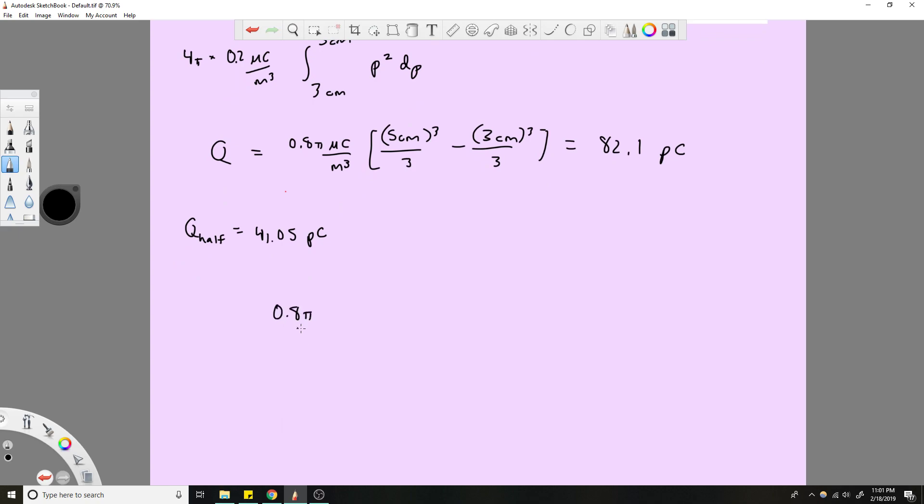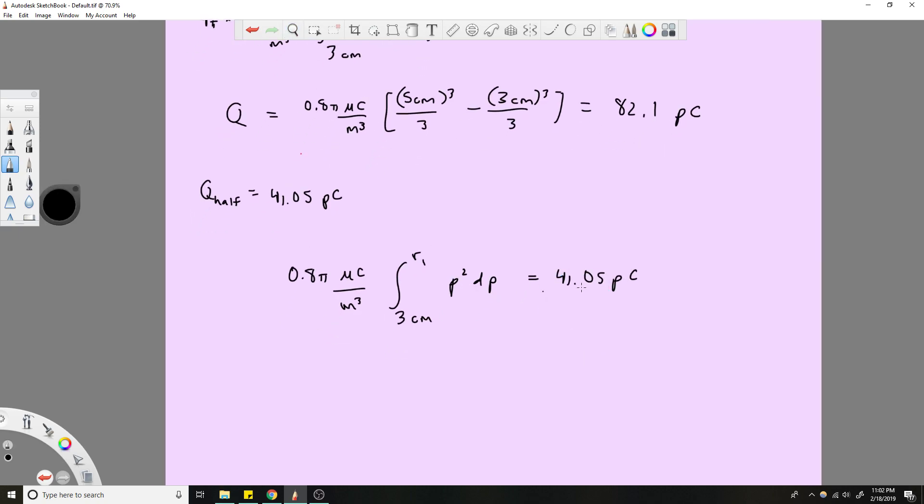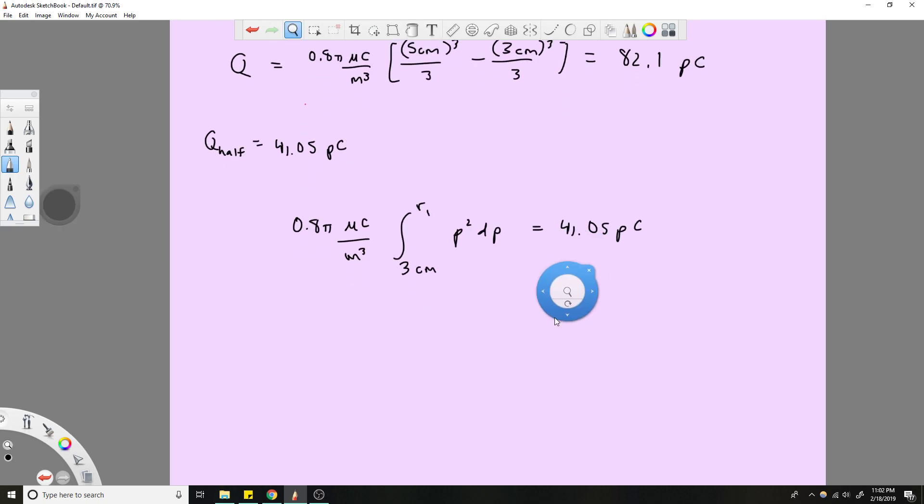0.8π microcoulombs per meter cubed times the integral of 3 centimeters, instead of 5 centimeters like I was saying we have r1. That's the trick. Rho squared d rho. What do we set that equal to? We set that equal to 41.05 picocoulombs. Now that's rho, this is a different variable but just know that.